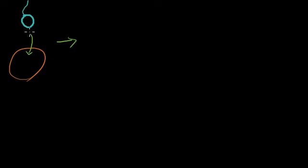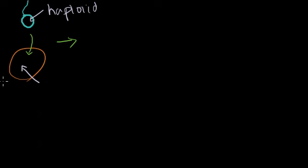The focus of this video is how this fertilized egg develops once it has become a zygote. You remember from the meiosis videos that each of these were haploid — they had half the complement of DNA. As soon as the sperm fertilizes the egg, all of a sudden you have a diploid zygote.